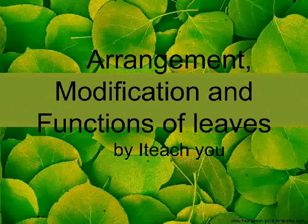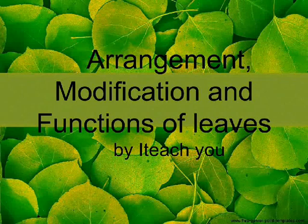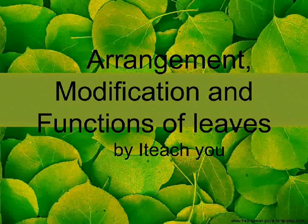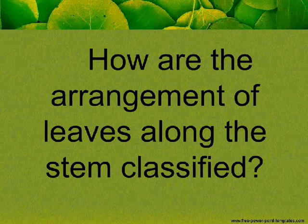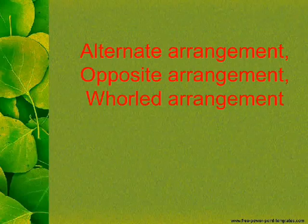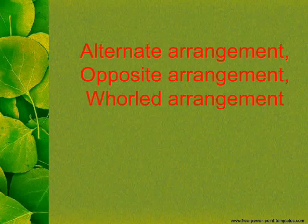Arrangement, Modification and Functions of Leaves. How are the arrangements of leaves along the stem classified? The three types are: Alternate Arrangement, Opposite Arrangement, and Whorled Arrangement.